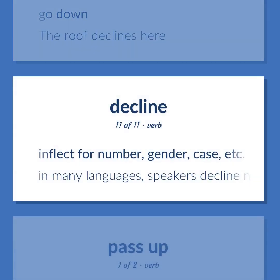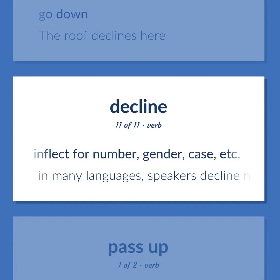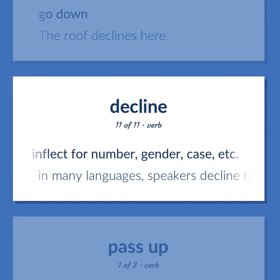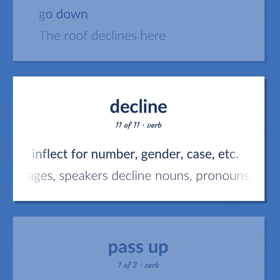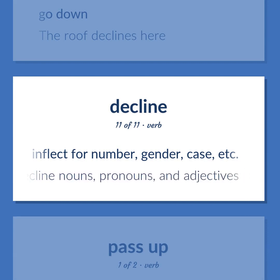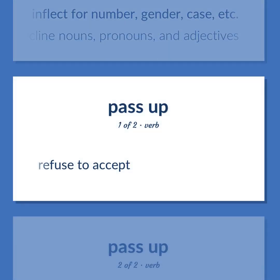Inflect for number, gender, case, etc. In many languages, speakers decline nouns, pronouns, and adjectives. Refuse to accept. Fail to acknowledge. Look for and gather. The person or thing that is rejected or set aside is inferior in quality.